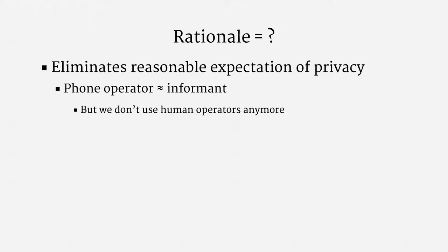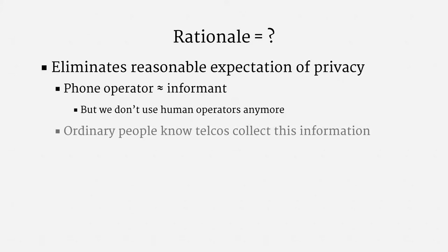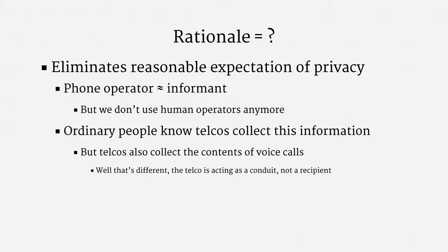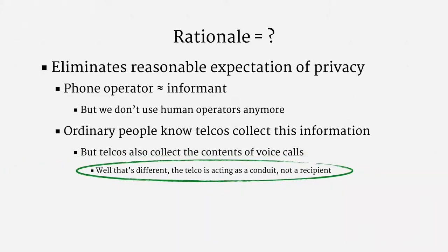Another reason why privacy expectations are diminished, courts have held, is that ordinary people know their telephone company collects this information. There's an important caveat, though: telephone companies also collect the contents of voice calls for purposes of passing them along to the other end, and often listen in to check call quality. So the narrower version of this rationale is that the Fourth Amendment applies where a communications company is acting as a conduit, but not where a communications company is the end destination for some information. This raises more questions than it answers.